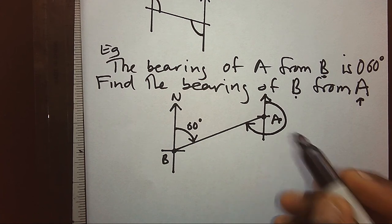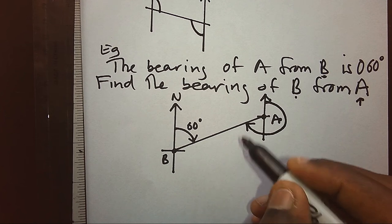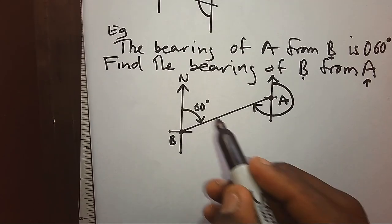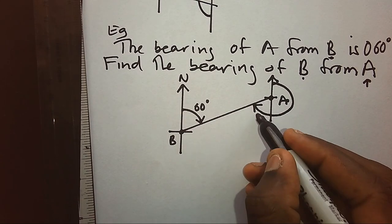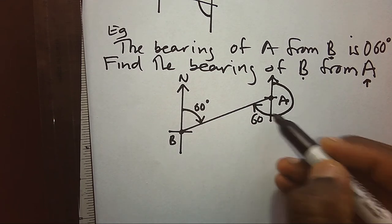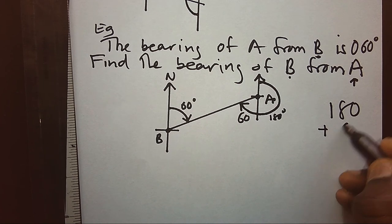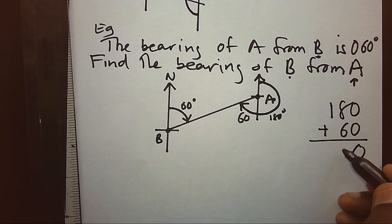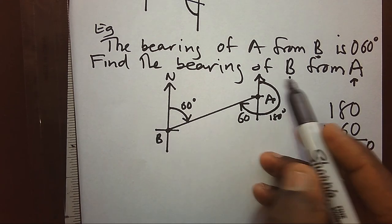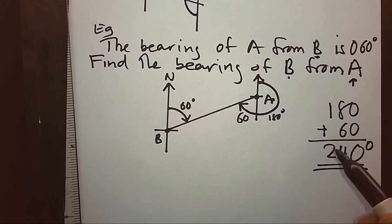Now the question is: how much is this angle that you have moved, and hence what will be your bearing? Using the alternate theory that this one and this one are equal, it will clearly tell us that if this part here is 60, then also this part here will be 60. But remember, when you start from north till down here you have covered 180 degrees. This means you will move 180 degrees and you will add on another 60, giving us 240 as our final bearing. Yes, the bearing of B from A will be 240.